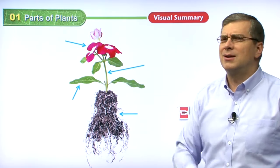All of these words are different parts of a plant. The first question: which part takes in light and air for the plant? If you guessed the leaf, you are correct. It must be the leaf — the roots are underground and there's no light underground, so it has to be the leaf.